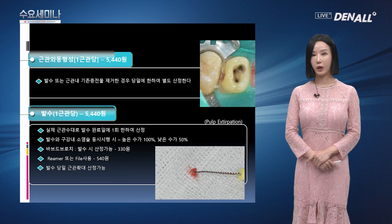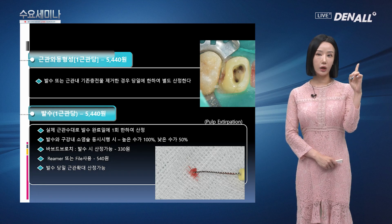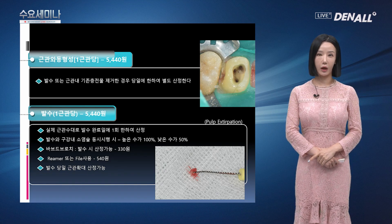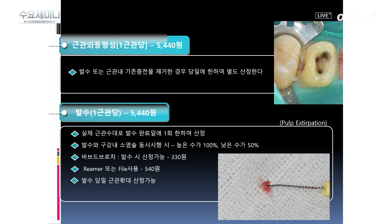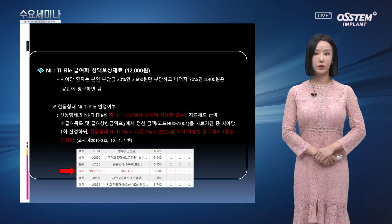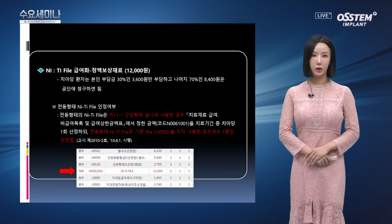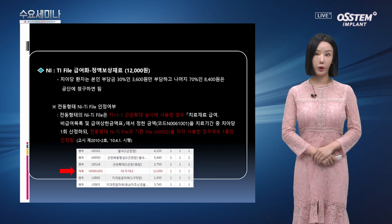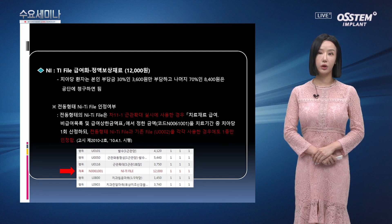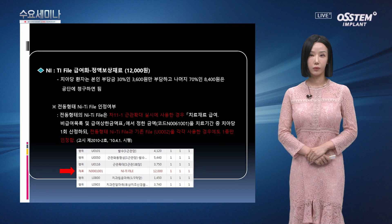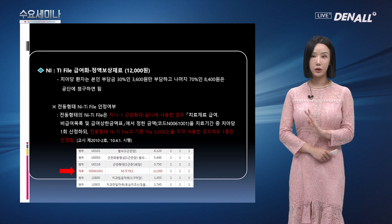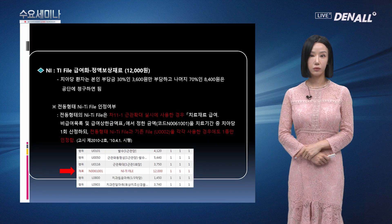다음으로 발수 항목입니다. 역시 1근관당으로 청구되고 5,440원입니다. 실제 근관 수대로 발수 완료일에 1회 한하여 산정합니다. 바비드 브로치는 330원, 리머 또는 파일은 540원 산정합니다. 발수 당일 근관 확대는 산정 가능합니다. 나이타입 파일이 급여화되어 12,000원이 책정됩니다. 환자는 본인 부담금인 30%, 3,600원만 부담하고 나머지 70%인 8,400원은 공단에 청구하면 됩니다. 나이타입 파일과 기존 파일을 각각 사용한 경우에는 하나만 인정됩니다.